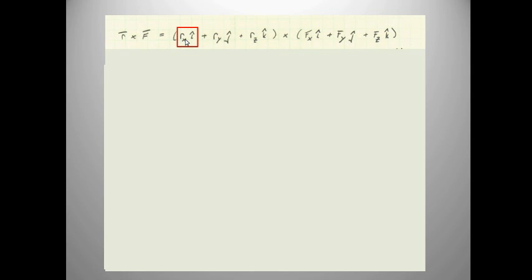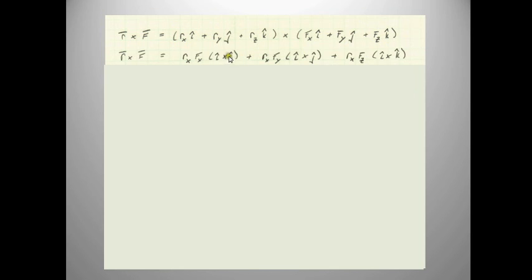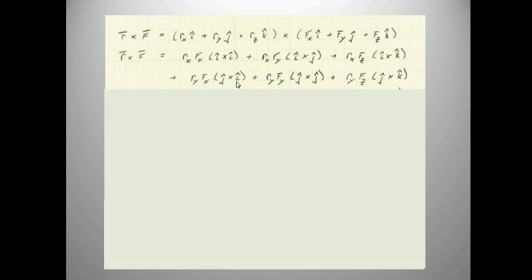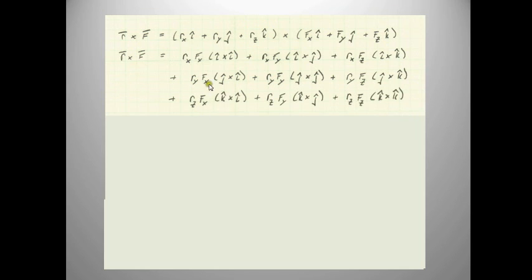One way of calculating the cross product is taking each component individually. Here are the x components of the r vector, and you can cross it respectively with each of the x, y, and z components of the force vector, giving you three terms. Next you take the y components and calculate them — ry times Fx and J cross I — and then lastly you take the z term of the position vector and do that calculation.